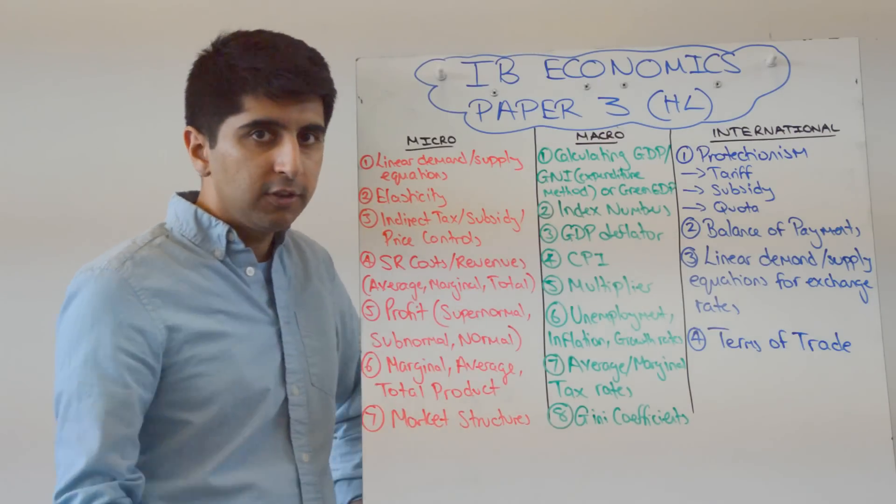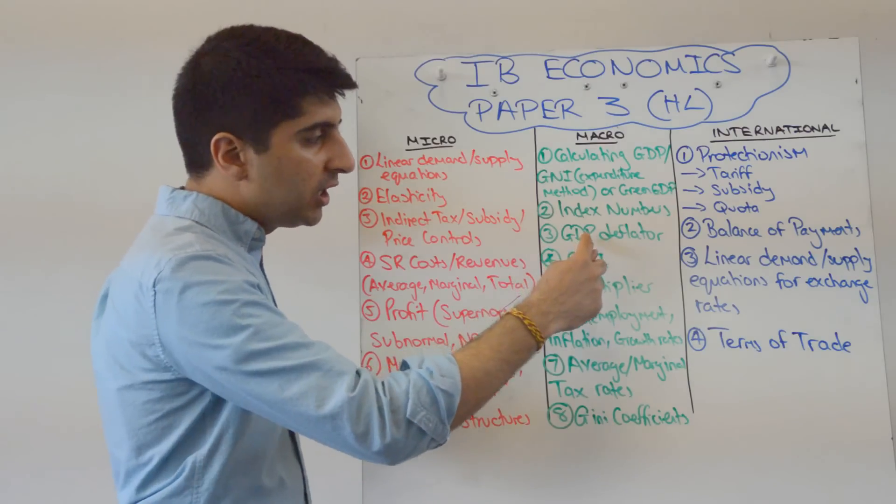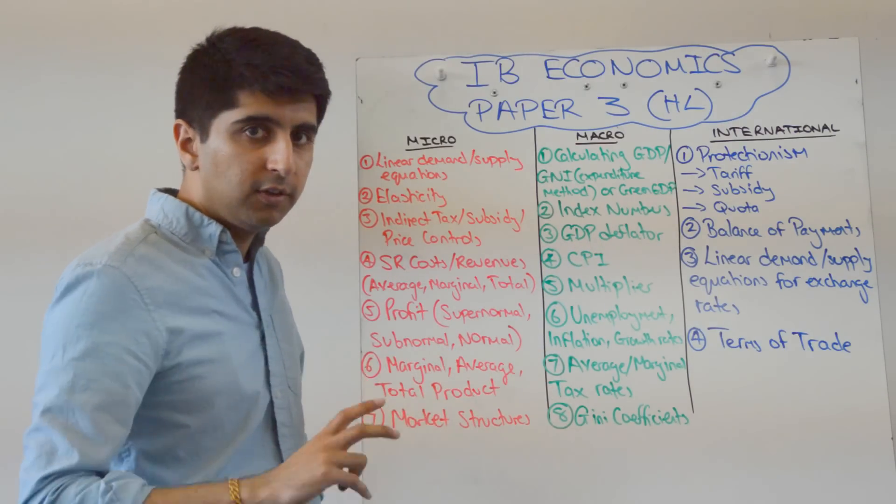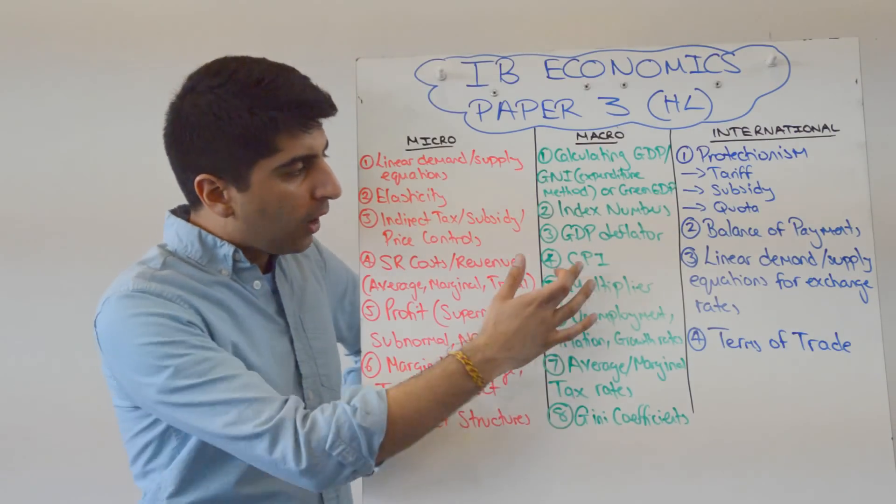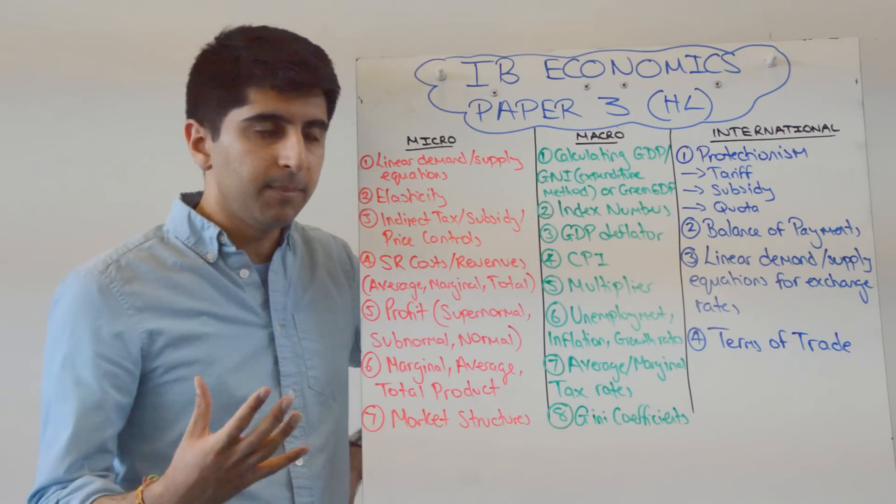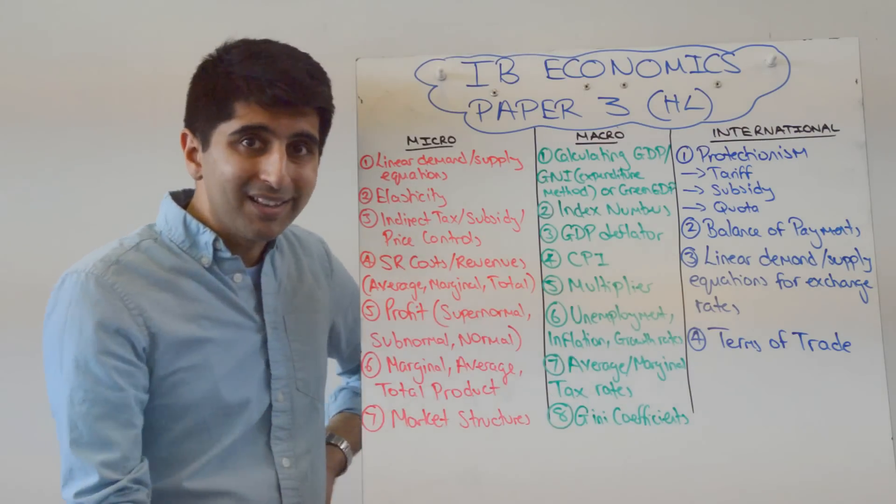Index number calculations. Do you know the equation to work out an index number? Make sure you do and how to interpret numbers. GDP deflator. Again, know the equation and how to jig the equation and how to work out things. CPI, or just more generally, price index. You might need to work out a price index, whether it's CPI or not. Multiplier equation. Unemployment, inflation, growth rates.